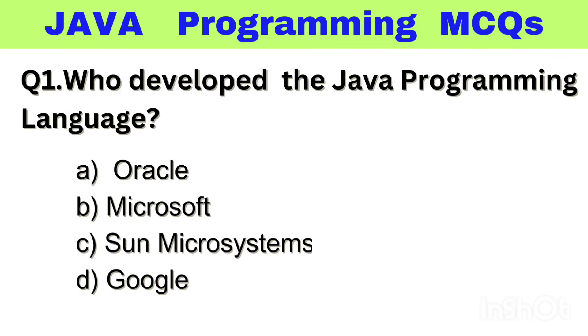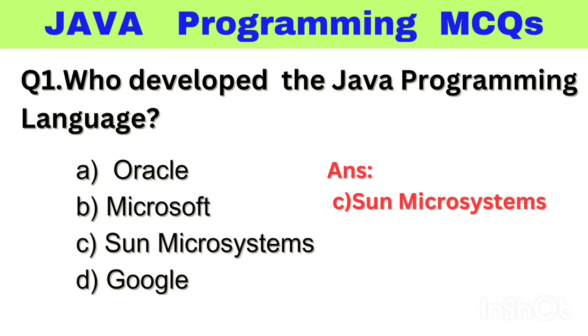Question number 1. Who developed the Java programming language? Option A: Oracle, B: Microsoft, C: Sun Microsystems, D: Google. The right answer is option C, Sun Microsystems.